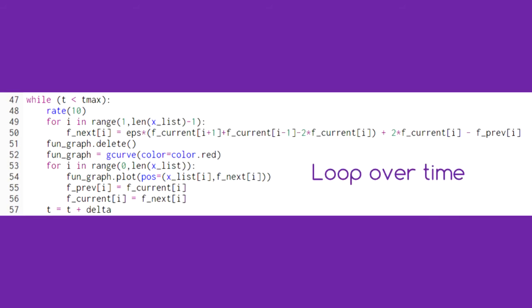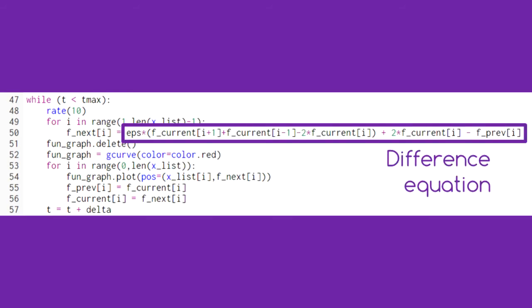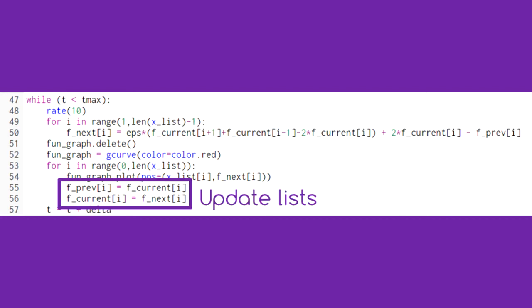Here we loop over time. With each time step, we need to update each point along the string using our difference equation. Then we update our lists to prepare for the next iteration.